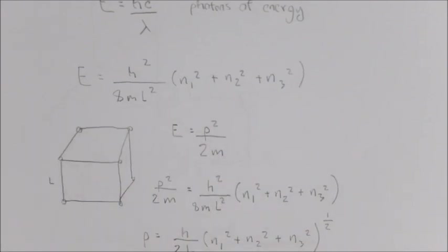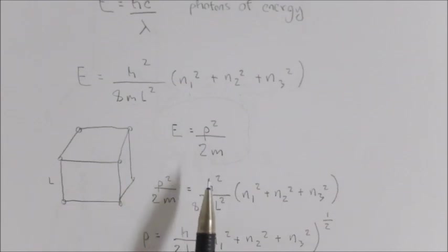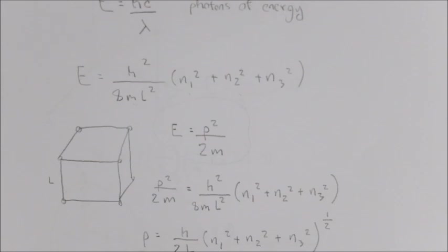But because we're talking about photons in this case, we need to rewrite this energy state equation in terms of no mass, because a photon is a massless particle. So we use this equation which relates energy and momentum. By substituting that equation into our current energy state equation, we get an equation for the momentum in terms of the integer quantum numbers.